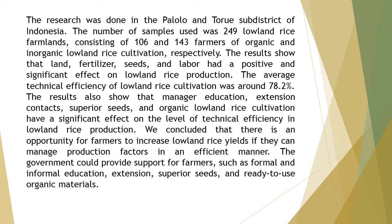The results show that land, fertilizer, seeds, and labor had a positive and significant effect on lowland rice production. The average technical efficiency of lowland rice cultivation was around 78.2%. The results also show that manager education, extension contacts, superior seeds, and organic lowland rice cultivation have a significant effect on the level of technical efficiency in lowland rice production.